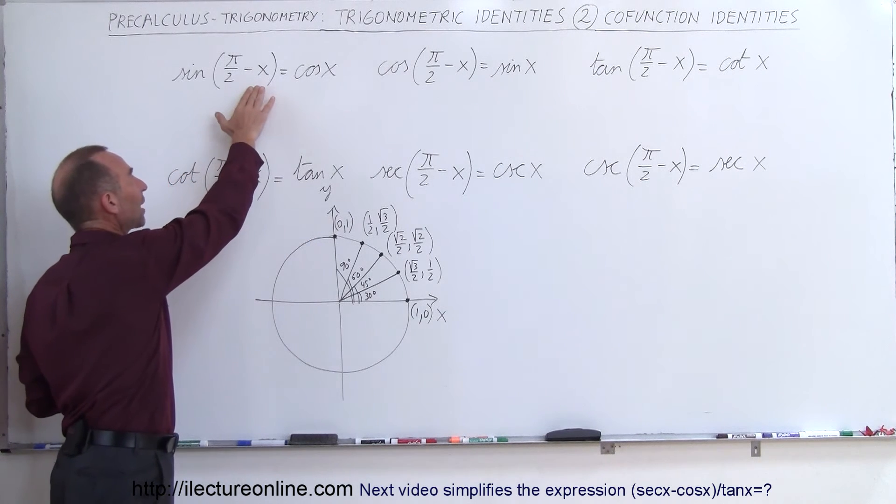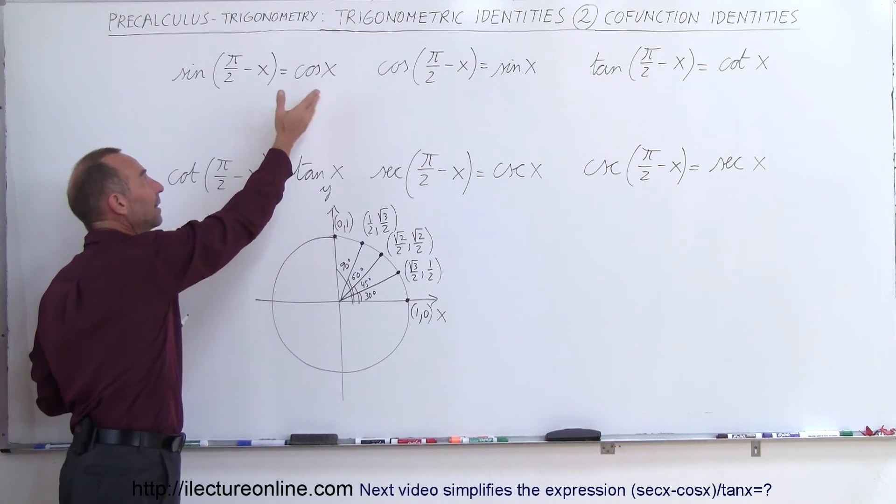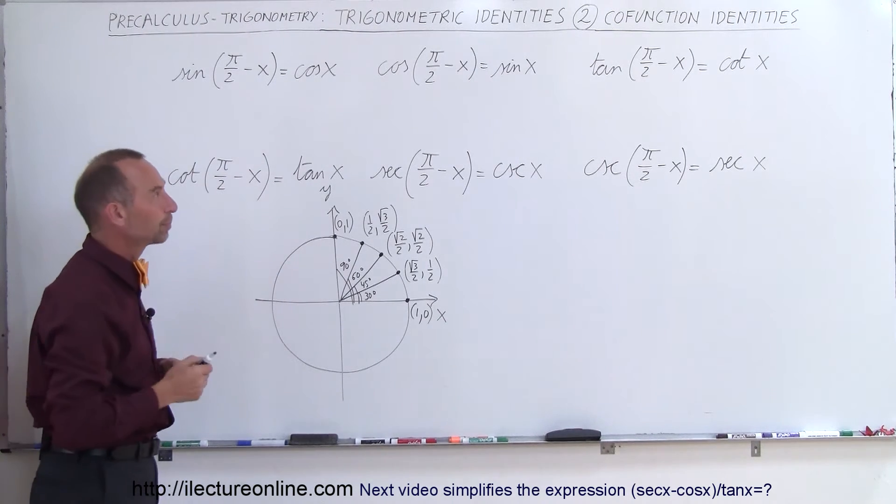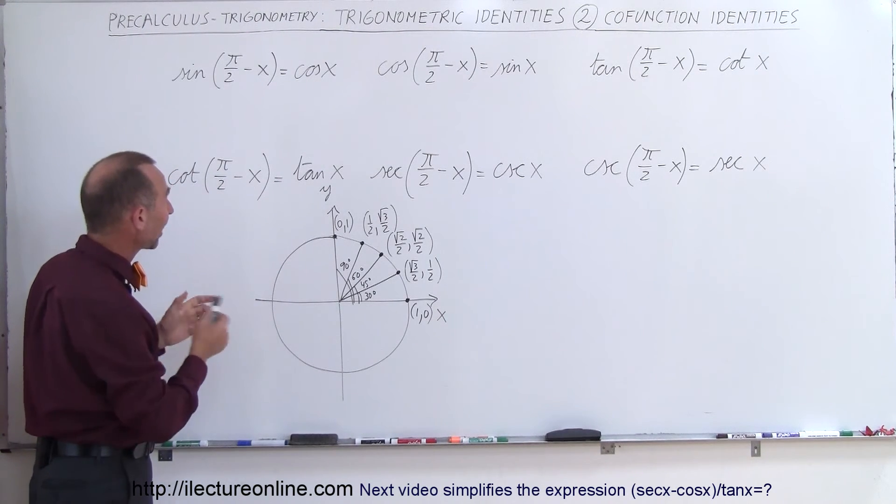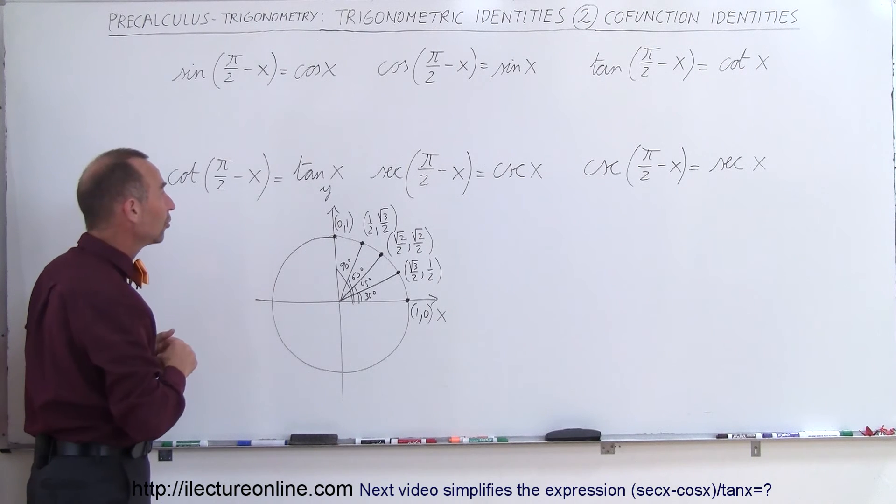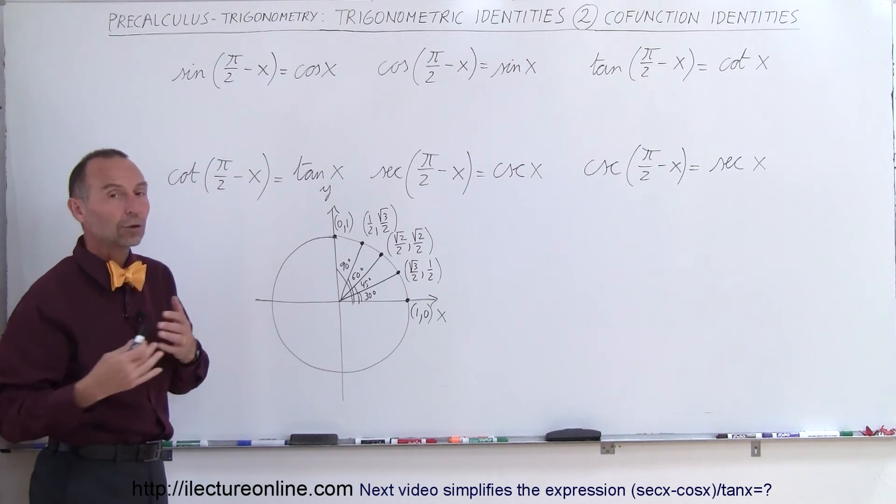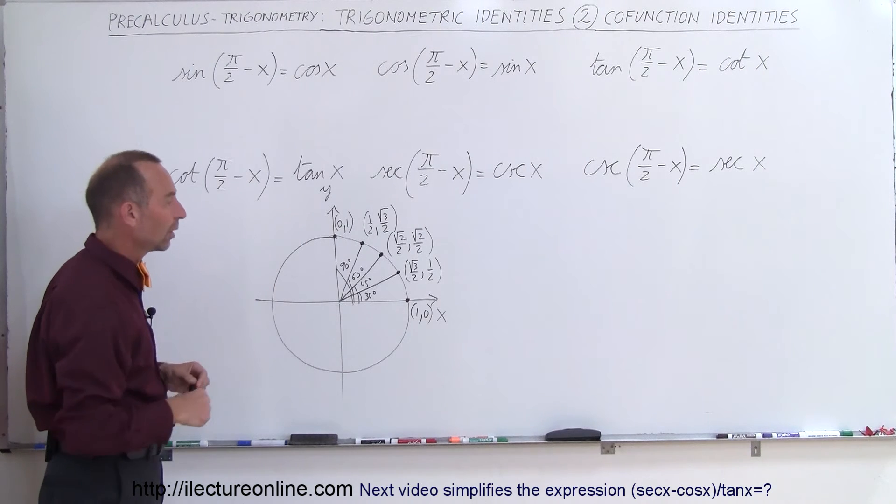When we take 90 degrees and we subtract the original angle from it, we get then the what we call the co-function. And so we can call the sine and the cosine co-functions, the tangent and cotangent co-functions, and the secant and the cosecant are co-functions, because of this relationship right there.